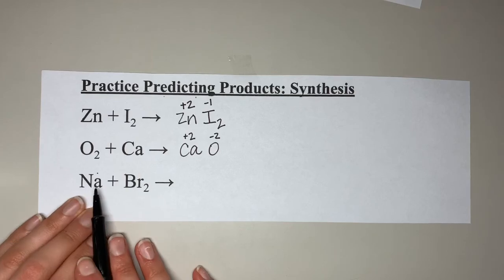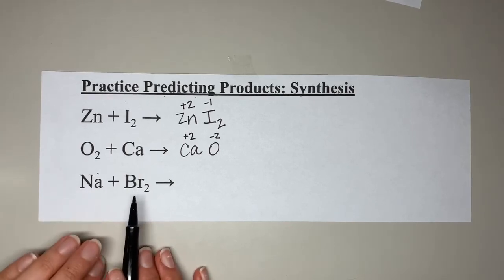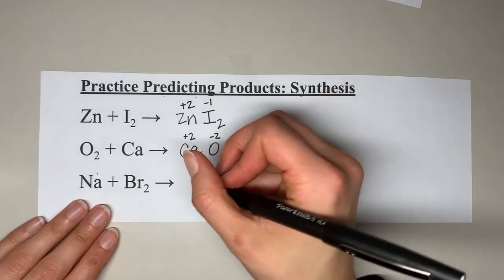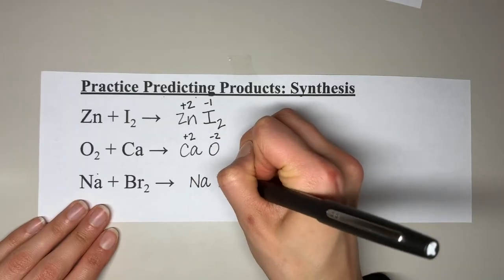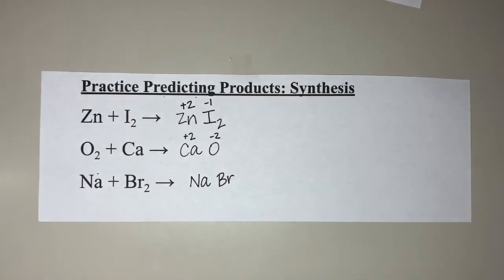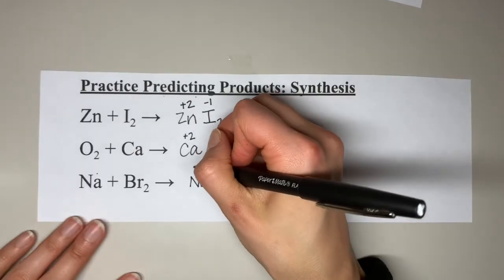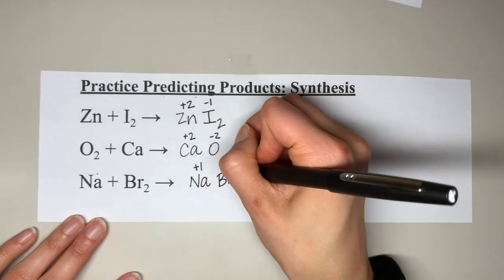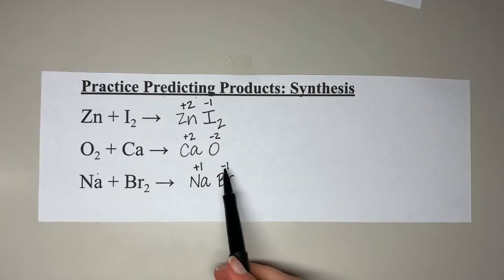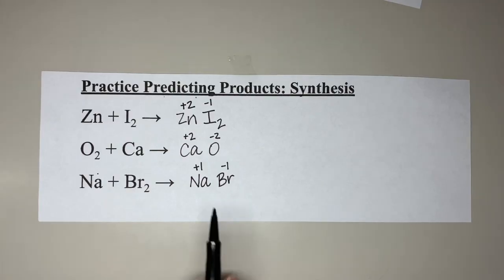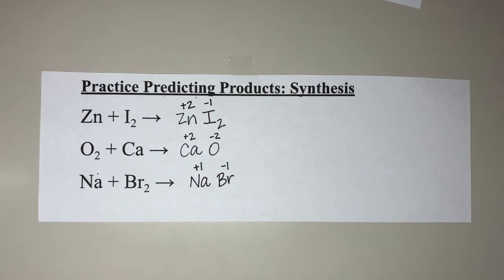Finally, sodium reacting with bromine. Our compound is going to consist of sodium and bromine. Sodium is a +1 charge and bromine is a −1. Those are equal and opposite, so they cancel out, leaving us with NaBr as our product. And that is it for synthesis reactions.